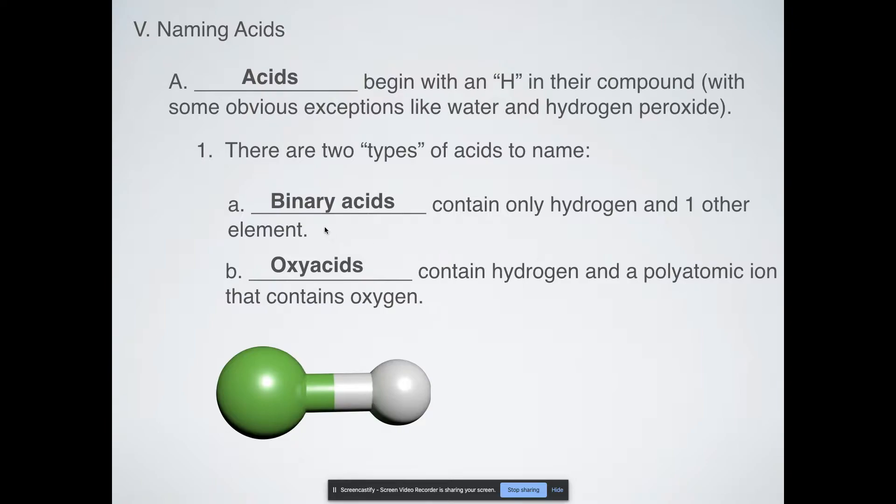Binary acids are like the simple ones you see. Here's an example: I have HCl here. This is my hydrogen and this is my Cl, hydrochloric acid. That's a binary acid. We just have hydrogen plus some other element.